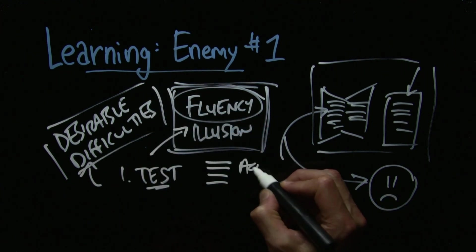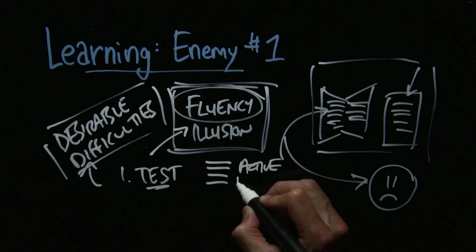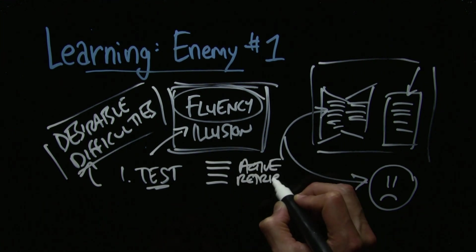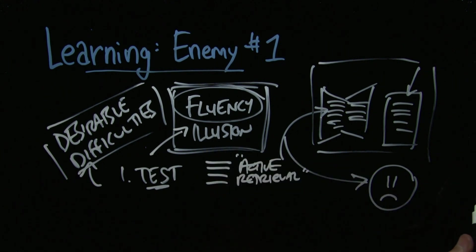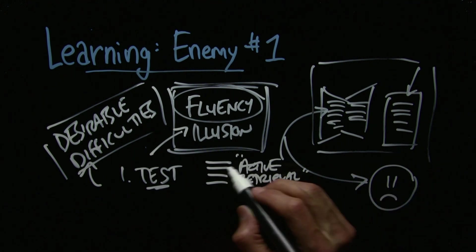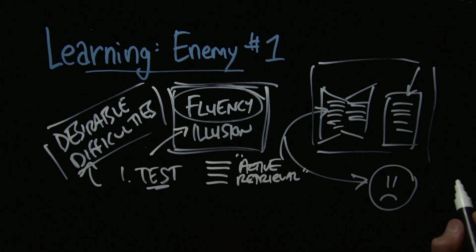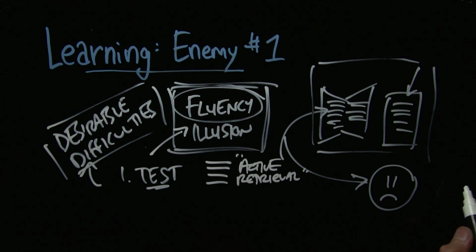The technical way that they describe testing is active retrieval. As you actively attempt to retrieve information from your brain, you, somewhat surprisingly, strengthen the actual memory trace. As you're trying to pull it out, you actually make it stronger. It's really cool.